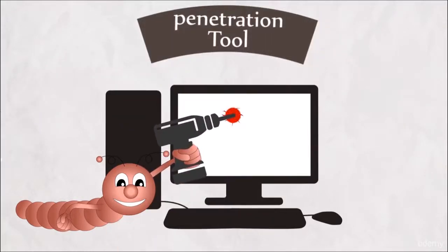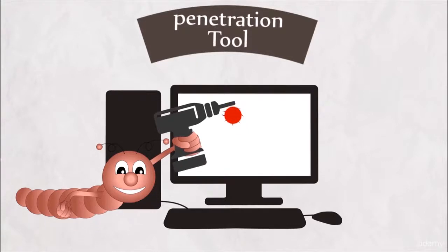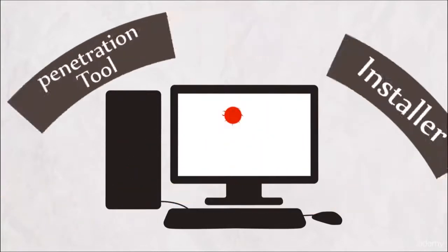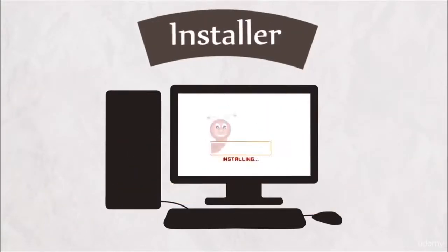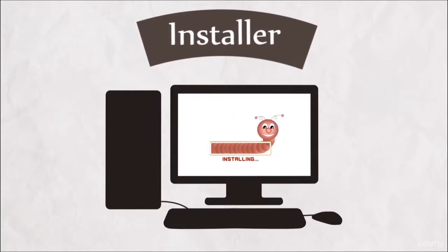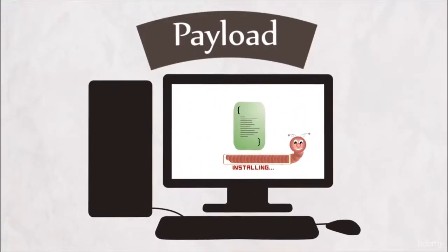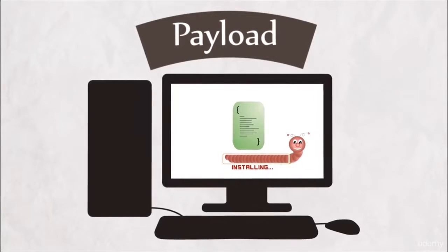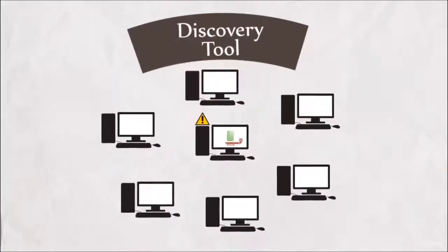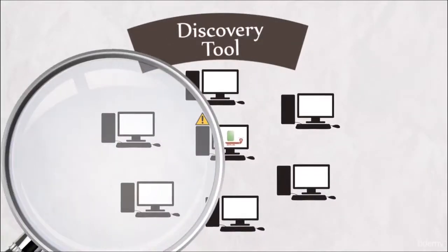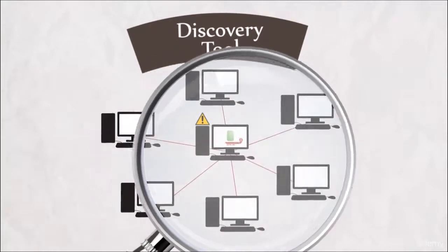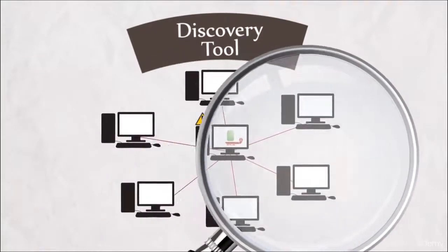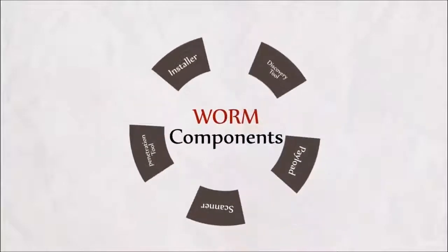This paves the way for the next component, the Installer, to bypass all the security mechanisms and inject the malicious code — that is, the payload — into the victim's system. The final component, the Discovery Tool, is the one that leads to the worm being called a network-specific worm, as it discovers the systems that are networked with the victim's machine.